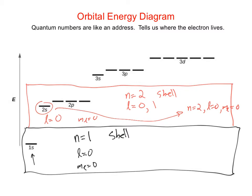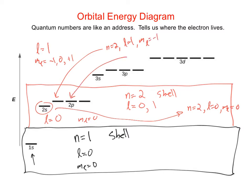When L equals one, we have the 2p subshell, and M sub L can be negative one, zero, or positive one. Because there are three possible values of M sub L, there are three 2p orbitals. One has quantum numbers n equals two, L equals one, M sub L equals negative one; another has n equals two, L equals one, M sub L equals zero; and the third has n equals two, L equals one, M sub L equals positive one.